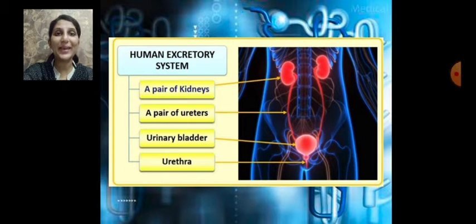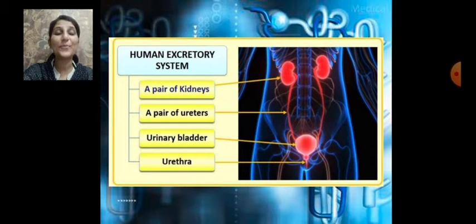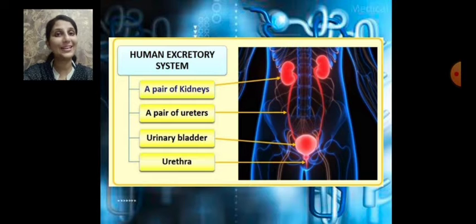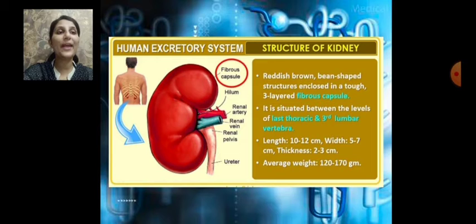In this diagram we can see a slight variation in the positions of the two kidneys — the left kidney and the right kidney. The right kidney is placed at a lower position compared to the left kidney. This is because of the position of the liver on the right side of the body; in order to accommodate the liver, the right kidney is placed lower.